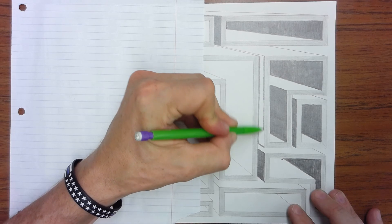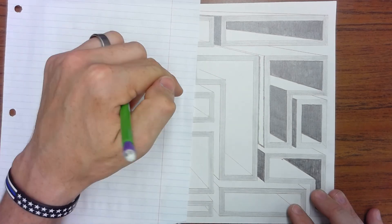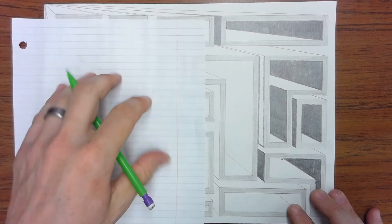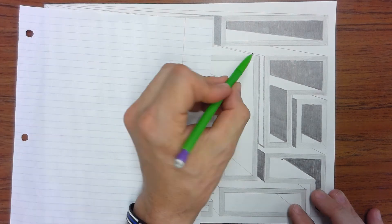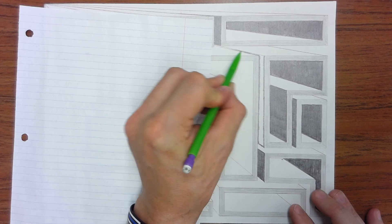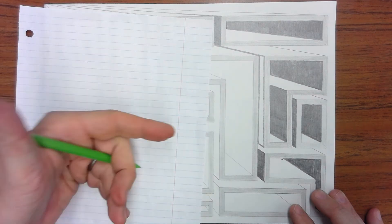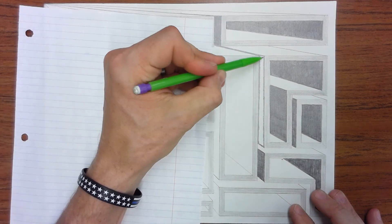A couple tips when working with this. One, this piece of paper here is so important. If you don't have this paper under your hand, you're going to make a huge mess all over your paper, and it's going to look terrible. Keep your hand on the paper. Don't just have the paper. You actually have to keep your hand on the paper.